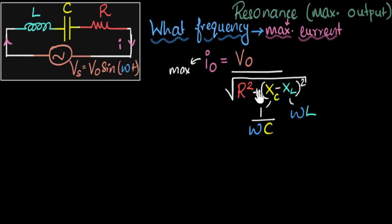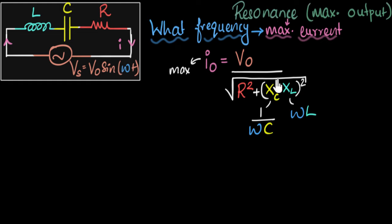So now let's ask ourselves, for what frequency does the impedance become minimum? Within the impedance there are two terms. I can't change R² by changing frequency, because resistance does not depend on frequency. But I can change the (Xc − XL)² term, because it does depend on frequency. Our entire question boils down to: for what frequency does this term become minimum? I want you to think about it — for what value of ω does (Xc minus XL)² become minimum? Pause the video and give it a shot.